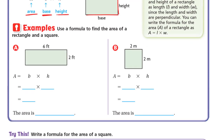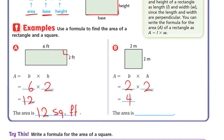Let's see some examples: use a formula to find the area of a rectangle and a square. Here we have a rectangle whose base is 6 feet and its height is 2 feet. The base may be 2 feet and the height may be 6 feet — whatever you have, these are your two dimensions, one is the base and the other is the height. So the area equals base times height: 6 multiplied by 2 equals 12. The area is 12 square feet.